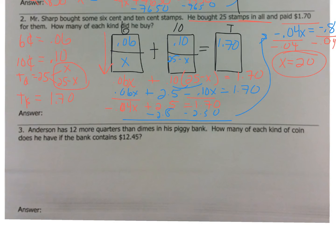Now, let's go back. I now know X is 20. So, 25 minus 20 is 5. So, let's make sure we answer the question. How many of each kind did he buy? So, we know he bought 20 of the 6-cent stamps, and then he bought 5 of the 10-cent stamps. And there's that question.